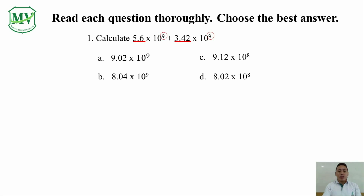Looking at the choices, we can tell that neither choice C nor choice D can be the correct answer, simply because their power is 8. Now, we are left with A and B. So, which one is the correct answer? We can figure this out by doing the solution.